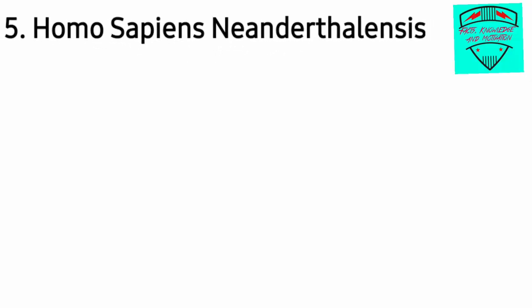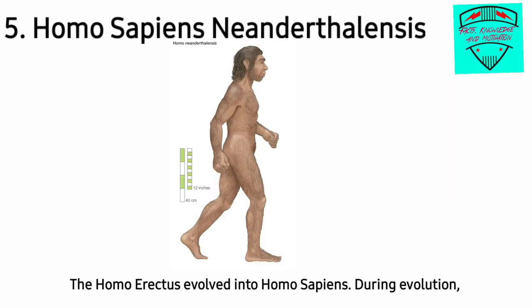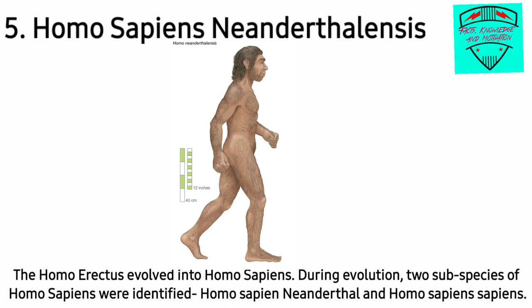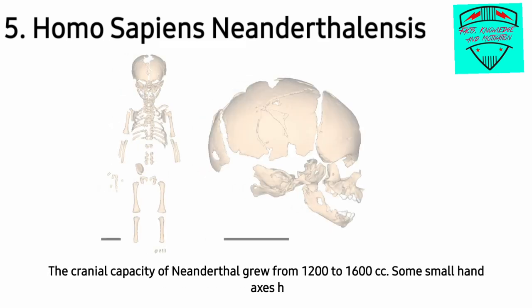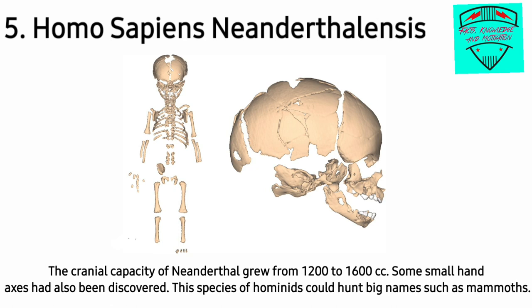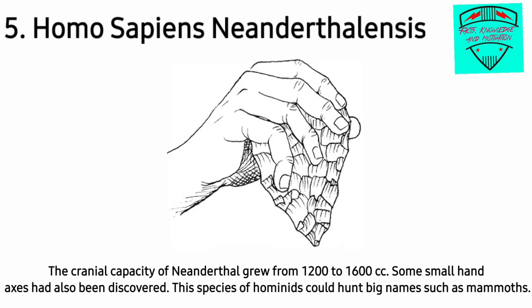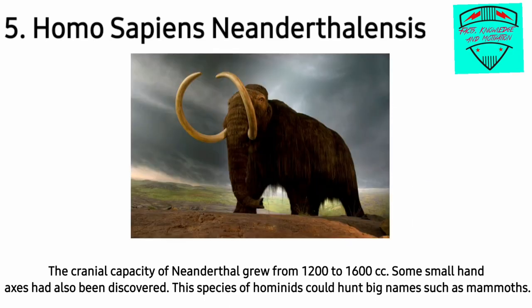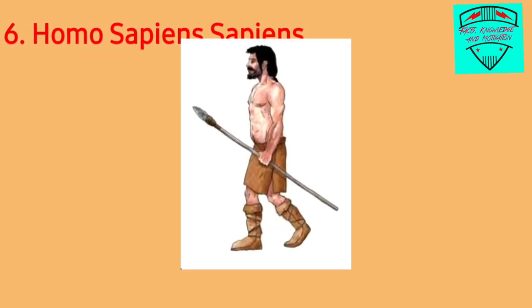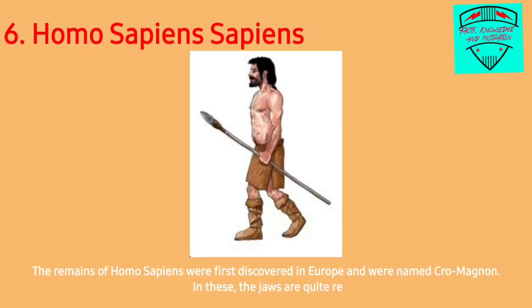The fifth stage is Homo sapiens neanderthalensis. Homo erectus evolved into Homo sapiens during evolution, and two subspecies were identified: Homo sapiens neanderthalensis and Homo sapiens sapiens. The cranial capacity of Neanderthals grew from 1200 to 1600 cc. Some small hand axes were also discovered. This species could hunt big animals such as mammoths.